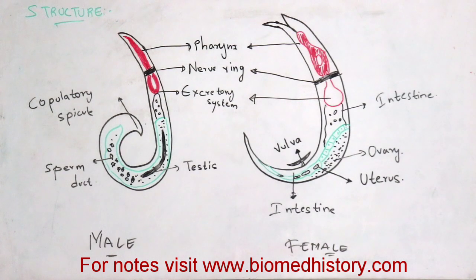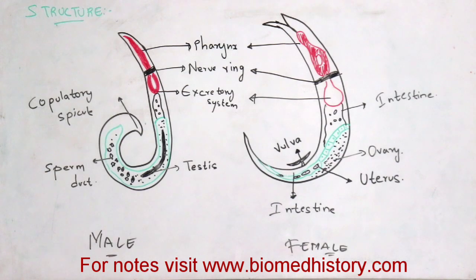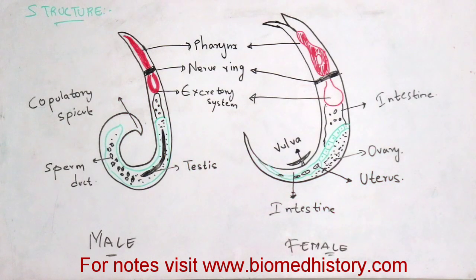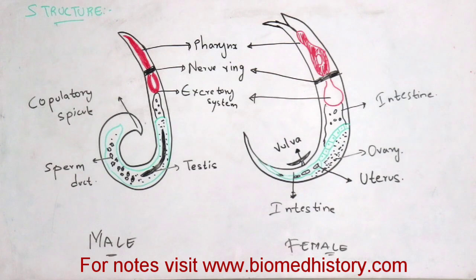In the male roundworm, there is a sperm duct, and within the sperm duct the formation of sperm takes place. In the female roundworm, within the ovaries the formation of eggs takes place. The eggs formed in the ovary are sent to the uterus, and from the uterus they come out through the anus.